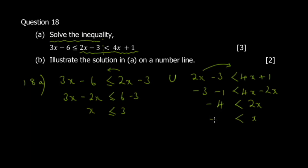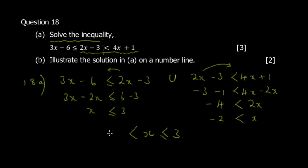Now combine both results. With x as focus: from the first inequality x ≤ 3 (facing away from x), from the second x > -2 (facing towards x). So the combined solution is -2 < x ≤ 3.